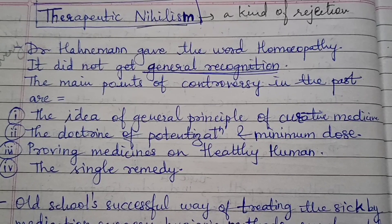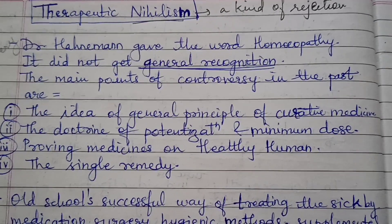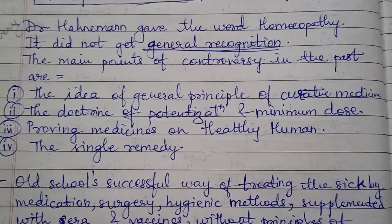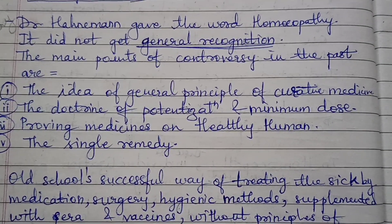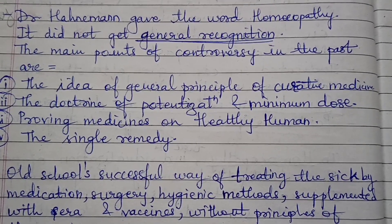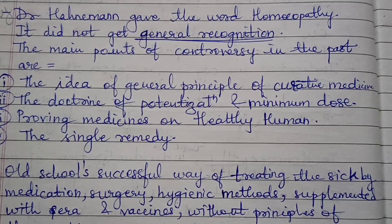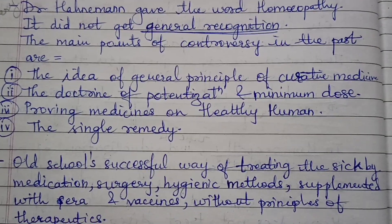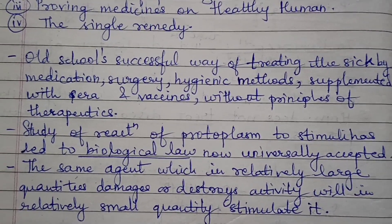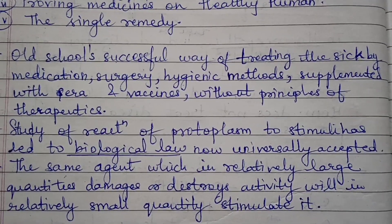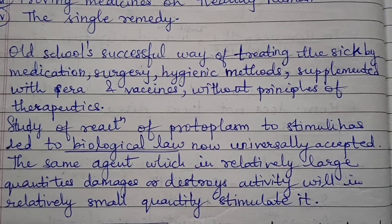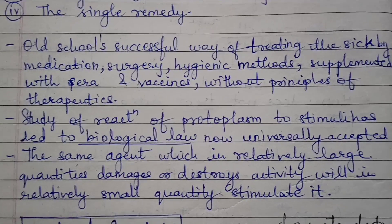Dr. Hahnemann gave the word homeopathy, but it did not get general recognition. The main points of controversy in the past are: the idea of a general principle of curative medicine, the doctrine of potentization and minimum dose, proving medicines on healthy humans, the single remedy, and the old school's successful ways of treating the sick — medication, surgery, hygiene methods, supplemented with sera and vaccines — all without principles of therapeutics.